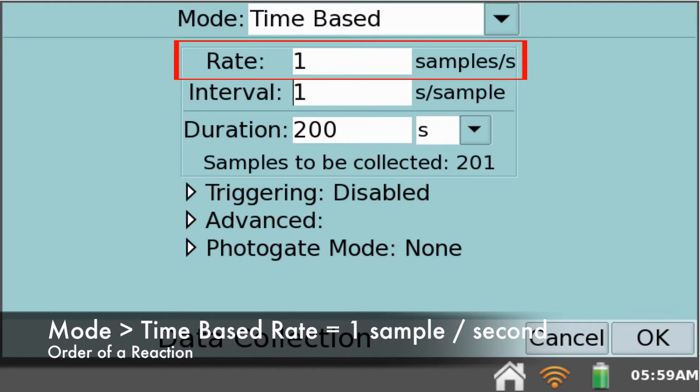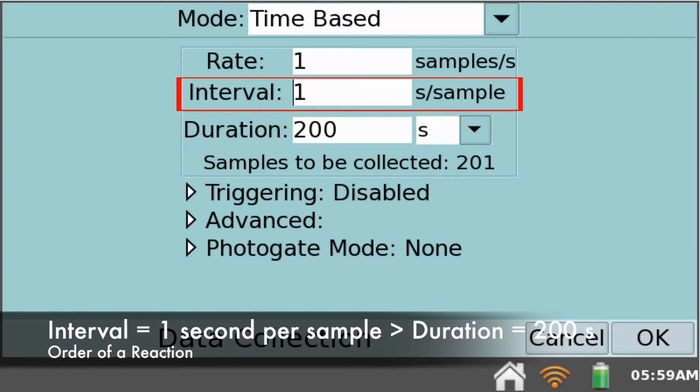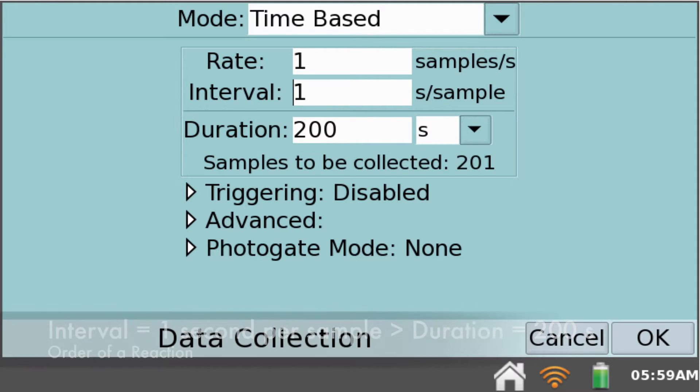Rate is set at 1 sample per second. Interval is set at 1 second per sample. And the duration of data collection is set to 200 seconds which is the default setting. Now you are ready for data collection.